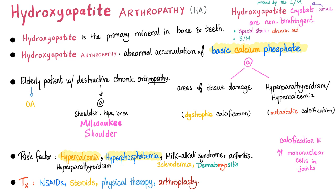The patient is typically elderly, usually female, with destructive chronic arthropathy especially at the shoulder — we call this the Milwaukee shoulder. Risk factors include hypercalcemia (due to hyperparathyroidism), hyperphosphatemia, milk-alkali syndrome, arthritis, scleroderma, and dermatomyositis. On x-ray there is calcification. On arthrocentesis there are increased mononuclear cells. These crystals are non-birefringent — neither positively nor negatively birefringent. They are very small and can be missed on light microscopy; use electron microscopy instead.